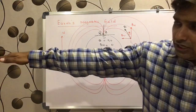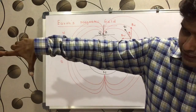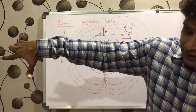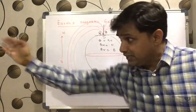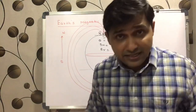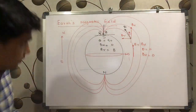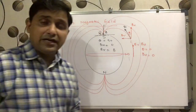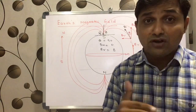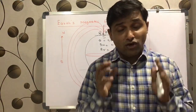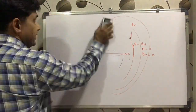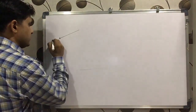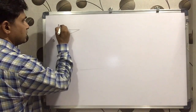Earth's magnetic field is not exactly horizontal; it is slightly inclined, which is why it has two components: horizontal and vertical. The horizontal component is horizontal and in the north-south direction. The vertical component is vertically downward. There is no component of Earth's magnetic field in the east-west direction — the field has a north-south component and a vertical component only. This is very helpful in electromagnetic induction.